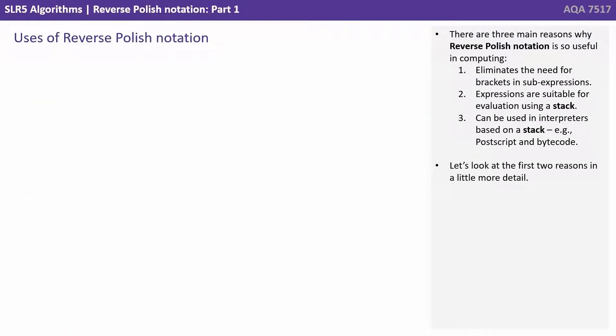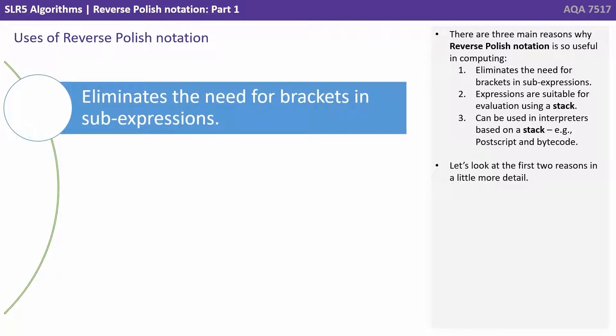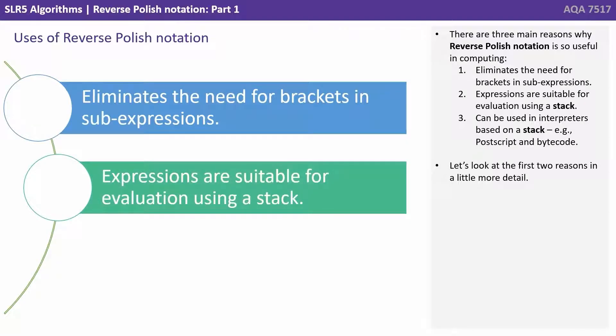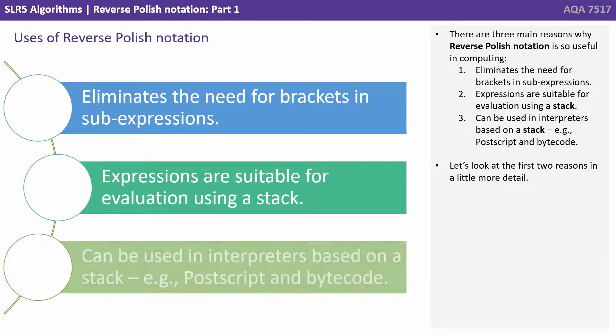There are three main reasons why reverse Polish notation is so useful in computing. One, it eliminates the need for brackets in sub-expressions. Two, the expressions are suitable for evaluation using a stack data structure. And three, can be used in interpreters based on a stack, e.g., postscript and bytecode. Let's look at the first two reasons in a little more detail so you really understand them.